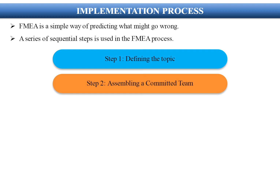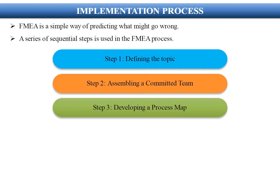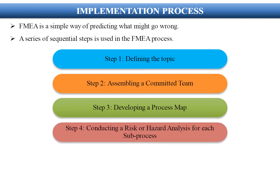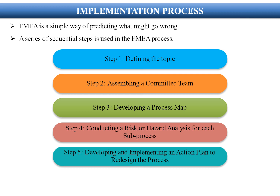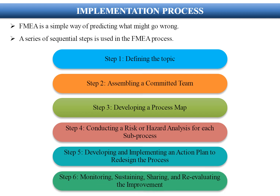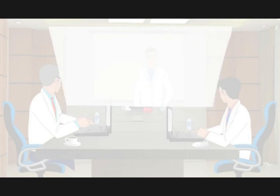Assembling a committed team, Step 3: developing a process map, Step 4: conducting a risk or hazard analysis for each sub-process, Step 5: developing and implementing an action plan to redesign the process, Step 6: monitoring, sustaining, sharing, and re-evaluating the improvement.